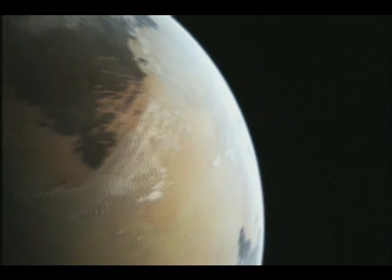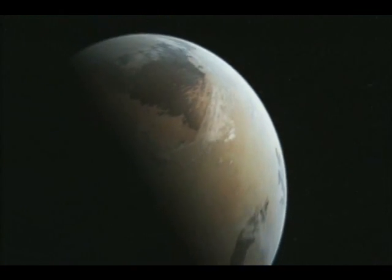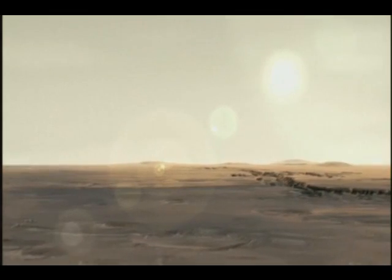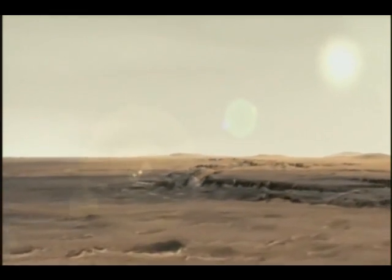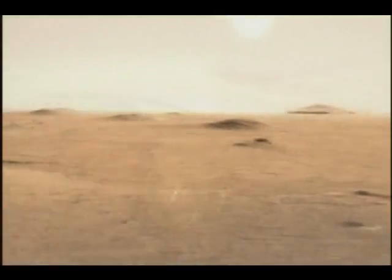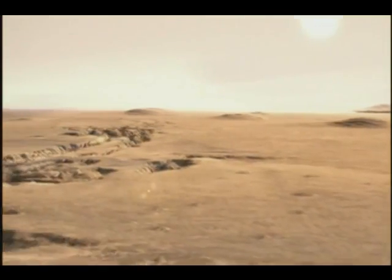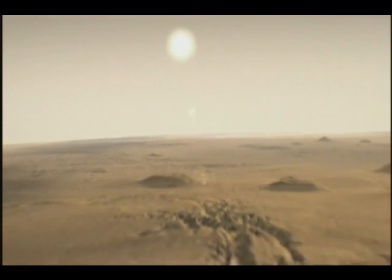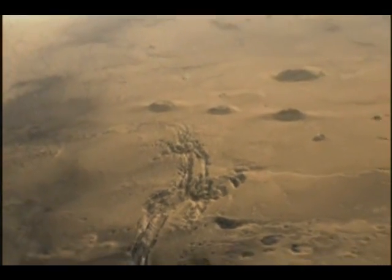You can see how destructive the wind can be by looking at Mars. Over millions of years, the solar wind has blown most of its atmosphere away. Now there is no liquid water on the surface, too little air to breathe. This could have been the fate of the Earth. So why wasn't it?